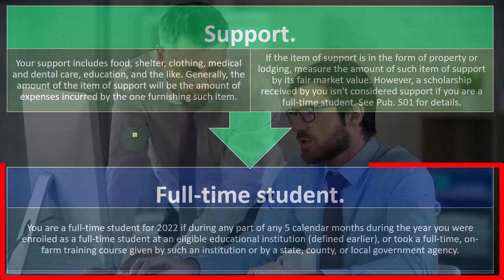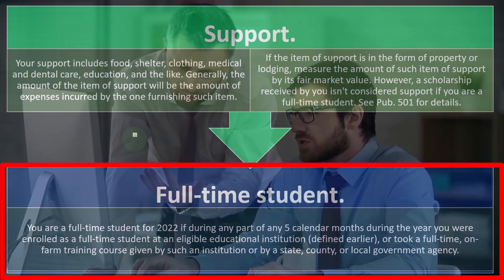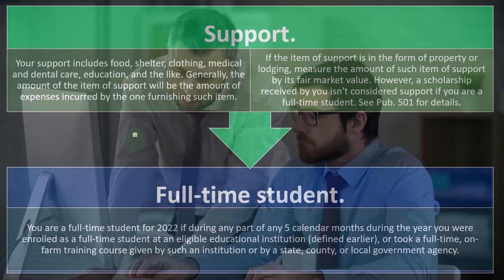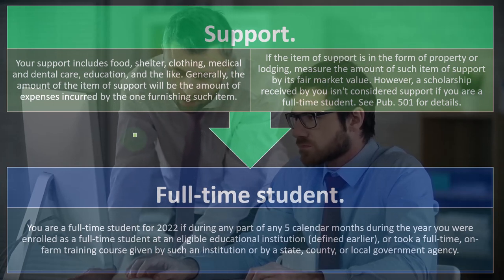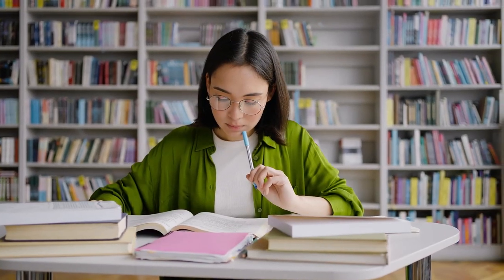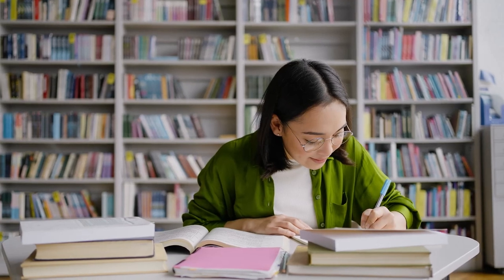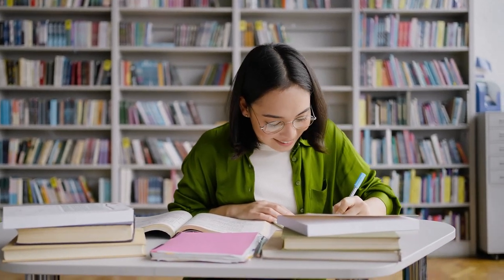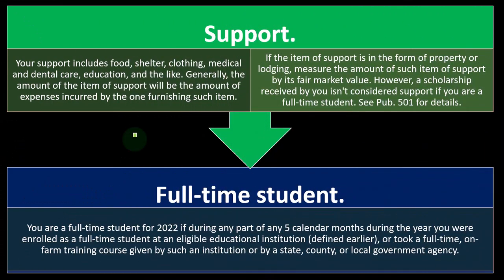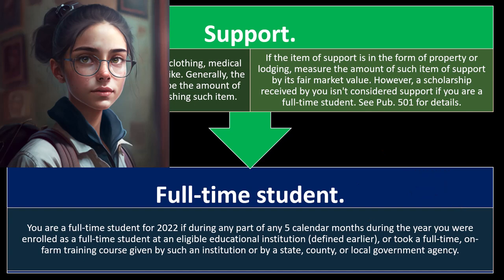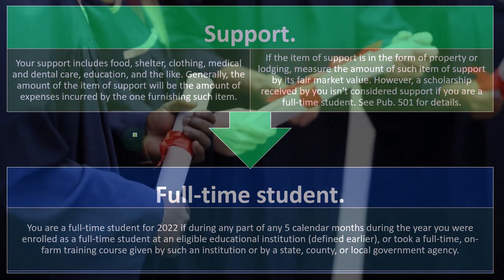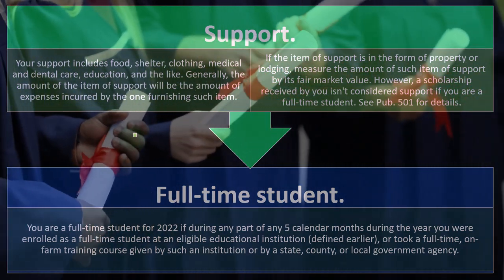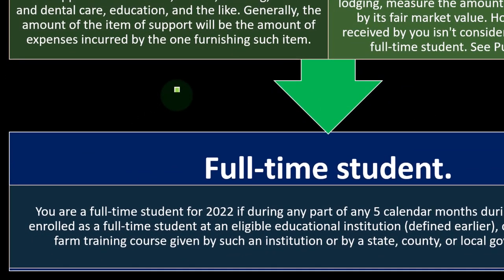The full-time student definition here is relevant not because it's a requirement to claim the credit, but to determine whether the student could be claimed as a dependent by someone else. You are a full-time student for 2022 if during any part of any five calendar months during the year you were enrolled as a full-time student at an eligible educational institution, or took a full-time on-farm training course given by such an institution or by a state, county, or local government agency.